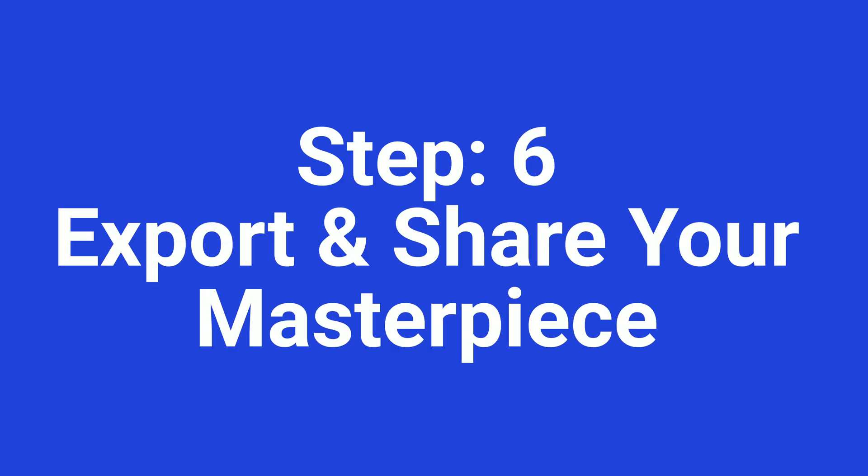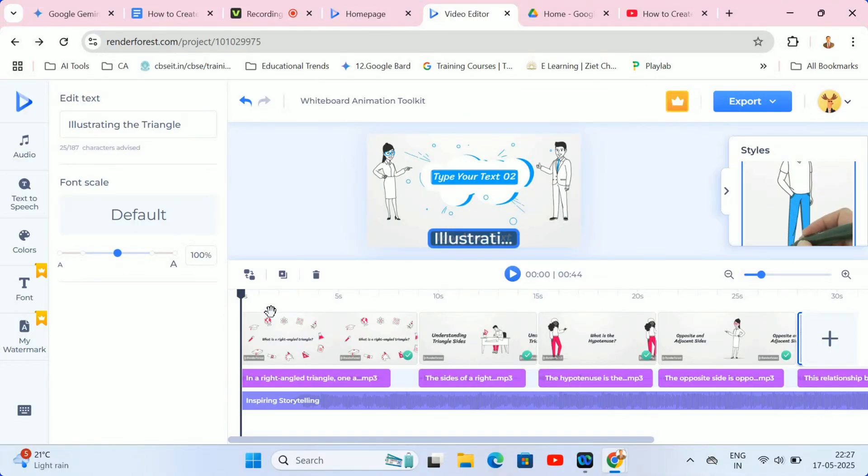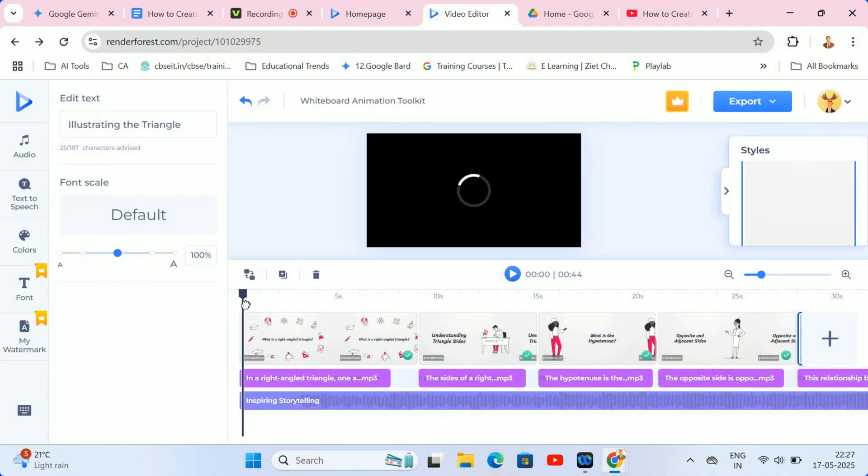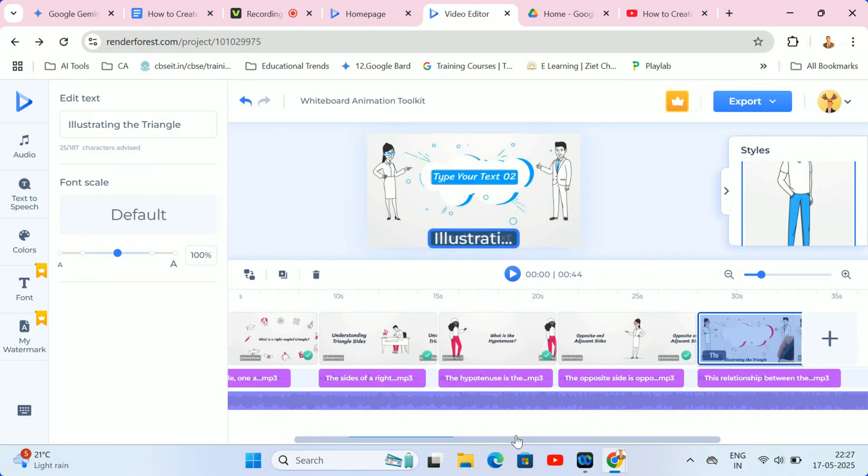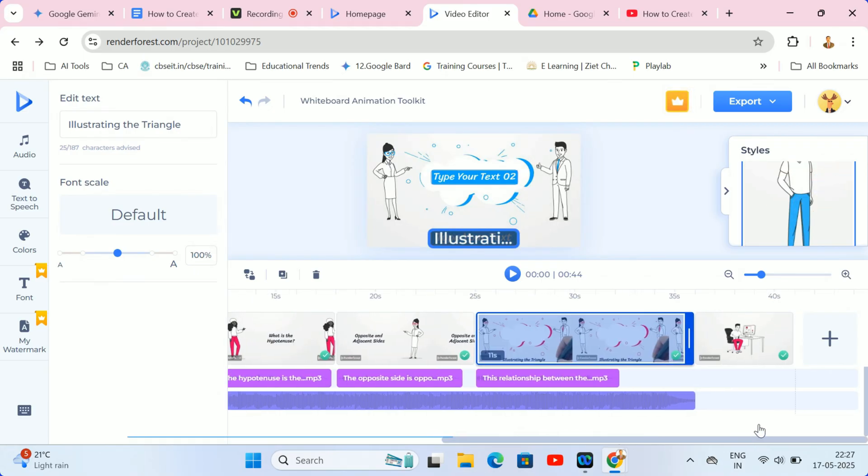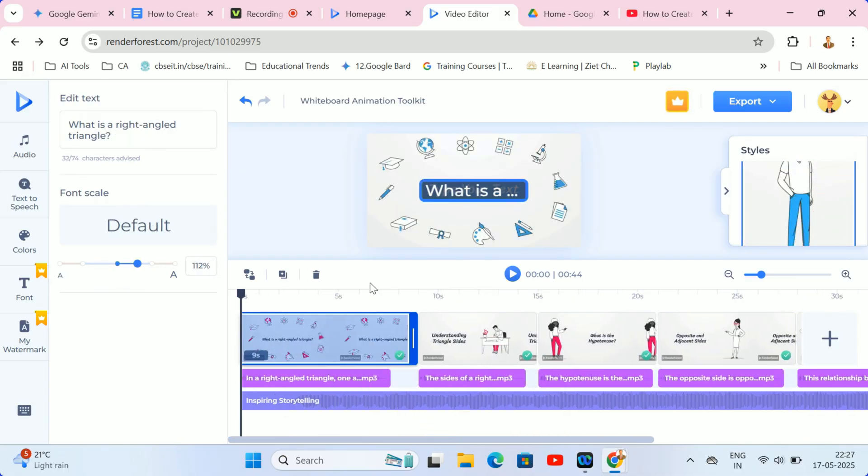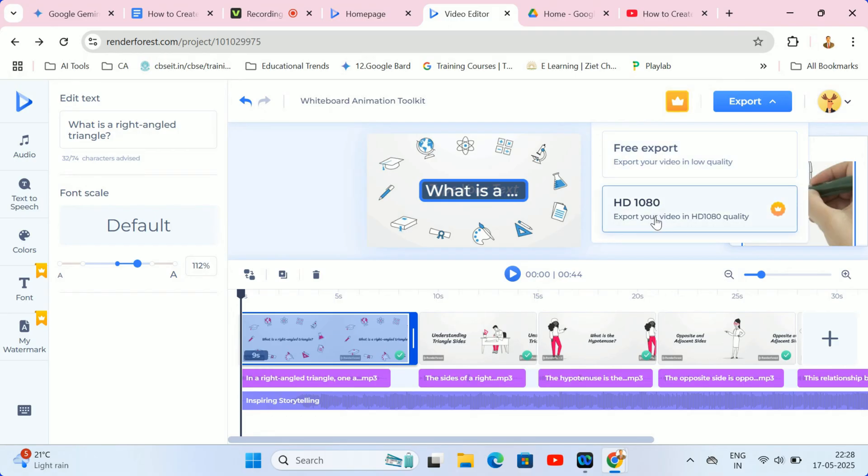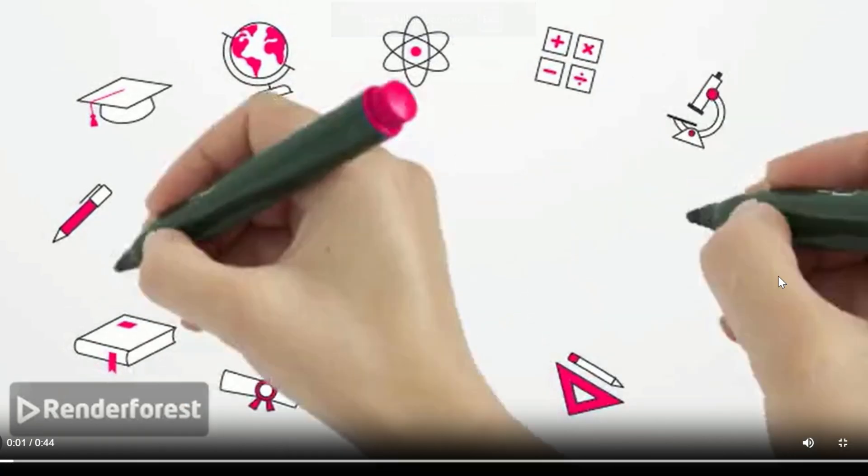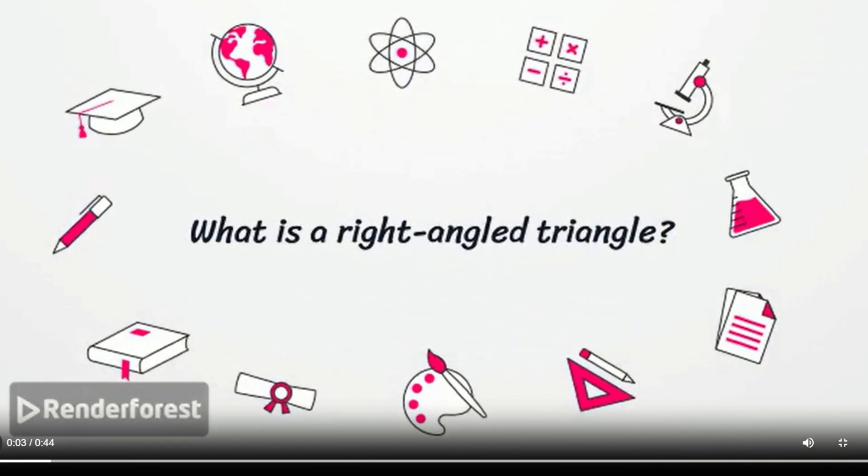Finally, step 6. Export and share your masterpiece. Alright, the moment we've been waiting for. Your awesome whiteboard animation is ready to be unleashed upon the world. Once you're completely satisfied with your creation, simply hit that export button. You'll then have a choice between exporting in SD quality, which is fantastic for free users, or opting for stunning HD quality, available with a paid plan. Now, just sit back for a quick 2-5 minutes while Renderforest works its magic.